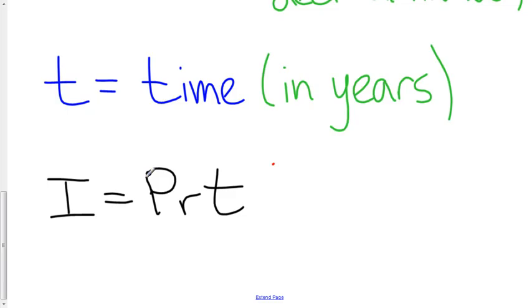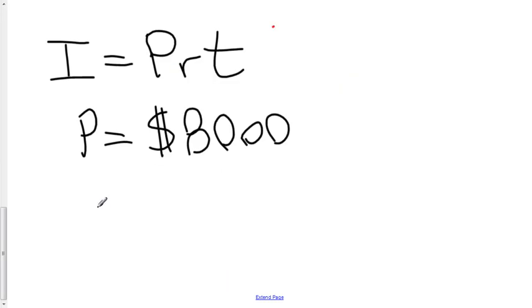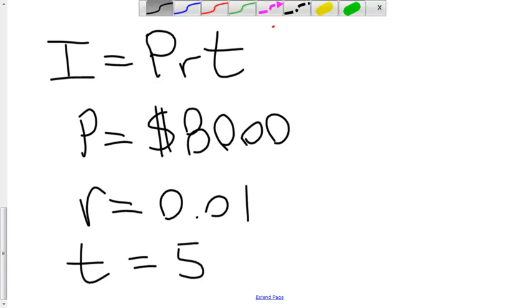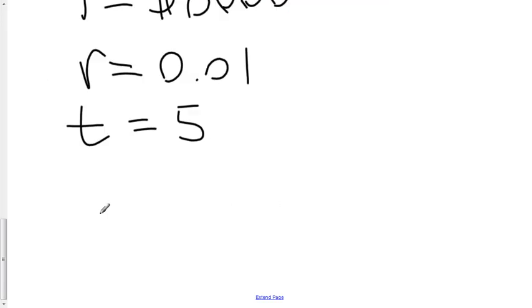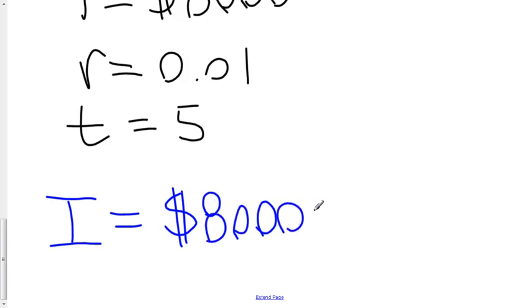So I have P equal to 8,000, R equal to 0.01, and T equal to 5. I plug those into my formula, so I get I is equal to 8,000 times 0.01 times 5.